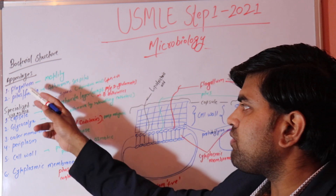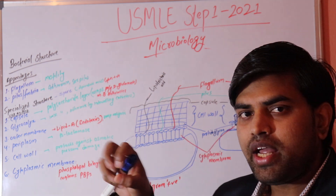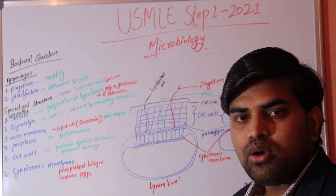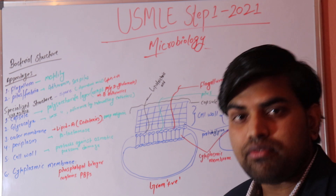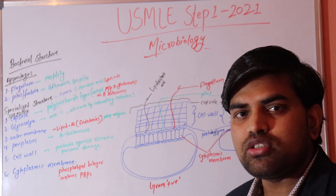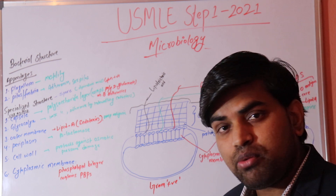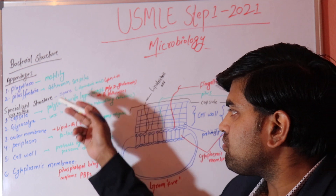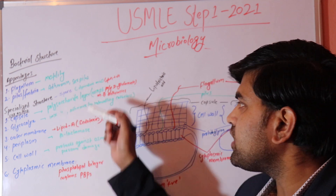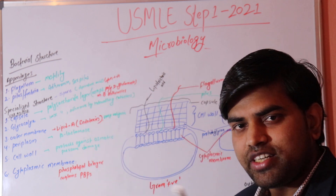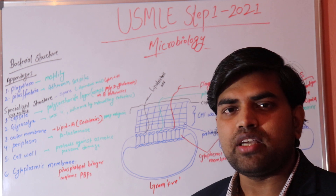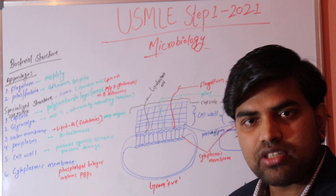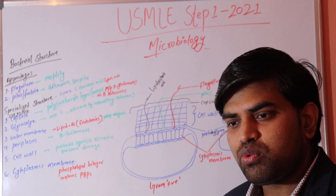Flagella provide motility while pili provide attachment. Bacteria also have a specialized structure called a spore, found only in gram positive bacteria. When bacteria encounter harsh conditions where survival is impossible, they convert themselves into spores. When conditions improve, they germinate back into normal bacteria. Spores are formed using dipicolinic acid and contain a keratin coat, DNA, and peptidoglycan. They can survive for years and serve as a mode of transmission.